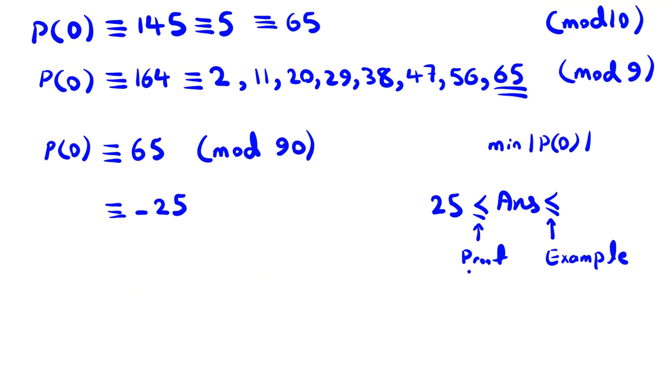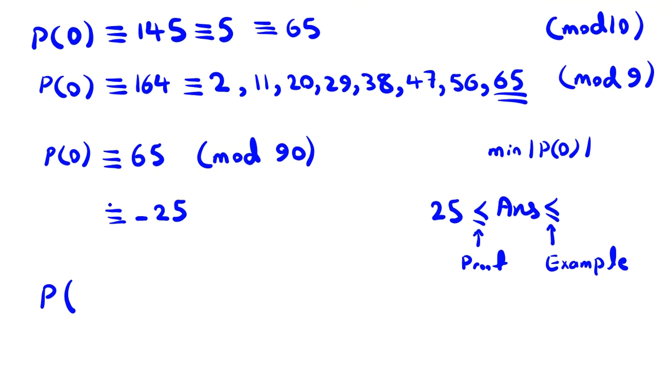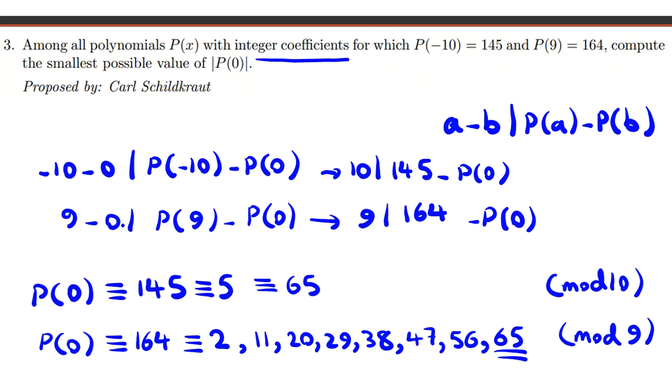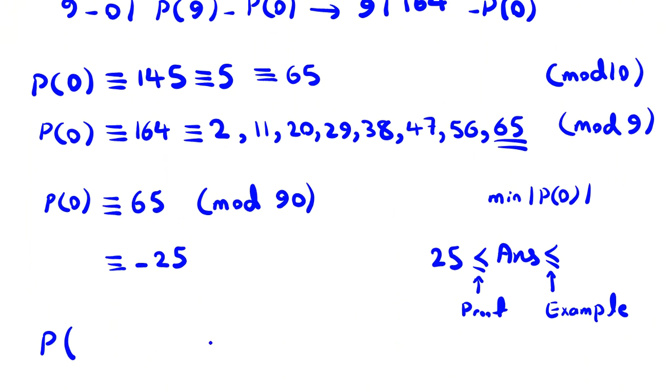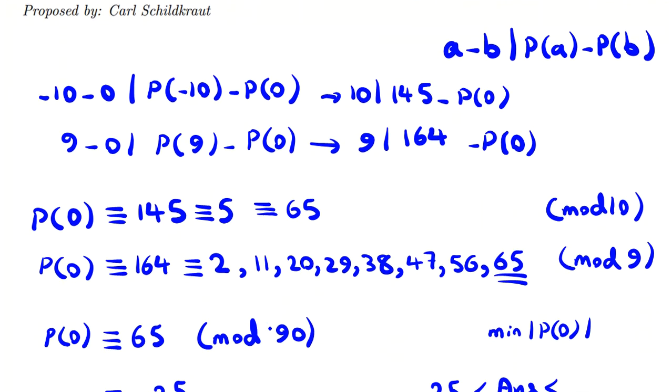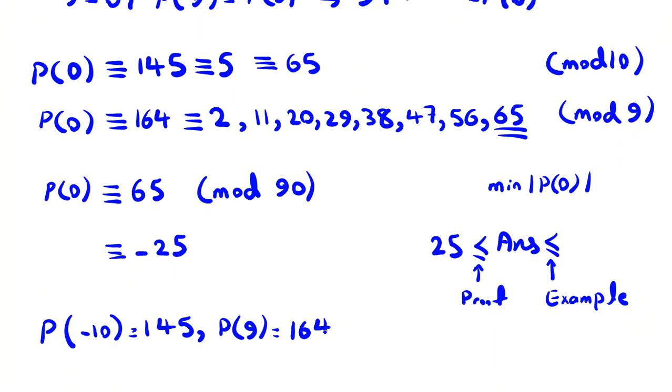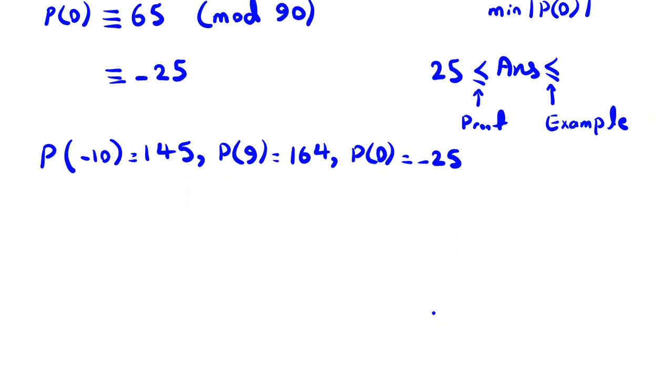So here I want to find polynomial with integer coefficients where P(-10) is 145, P(9) is 164, and P(0) is -25. Because we have four variables, let's check if P(x) has degree 2, because then we have three variables and three equations. Probably we can find ax² + bx + c because we want to find at least one example. Does it work?